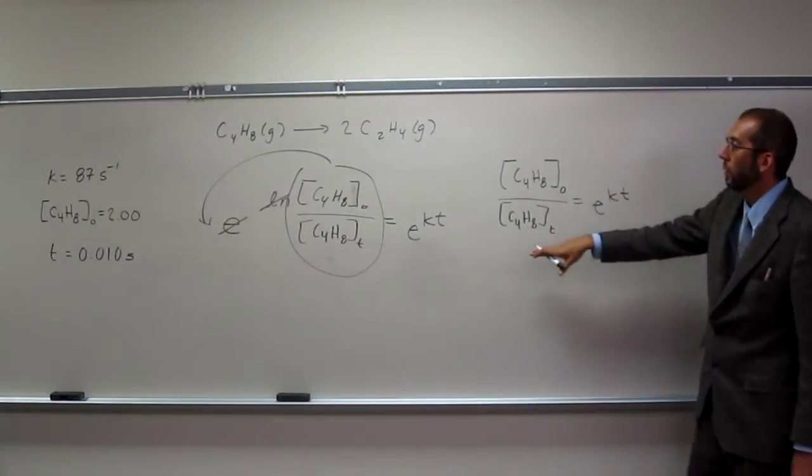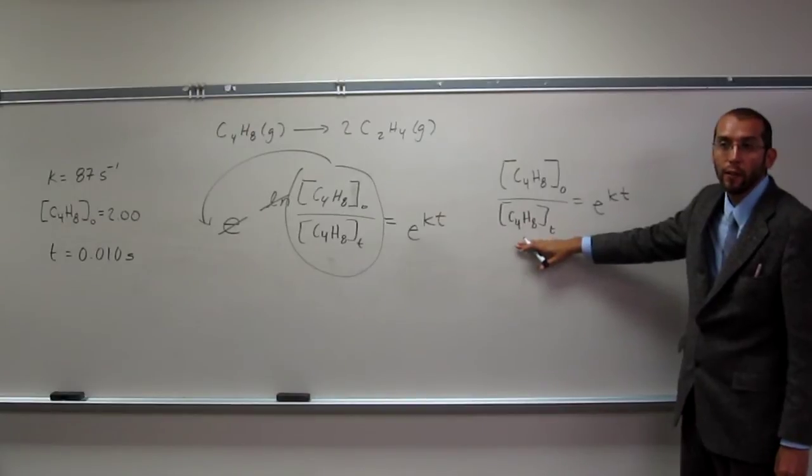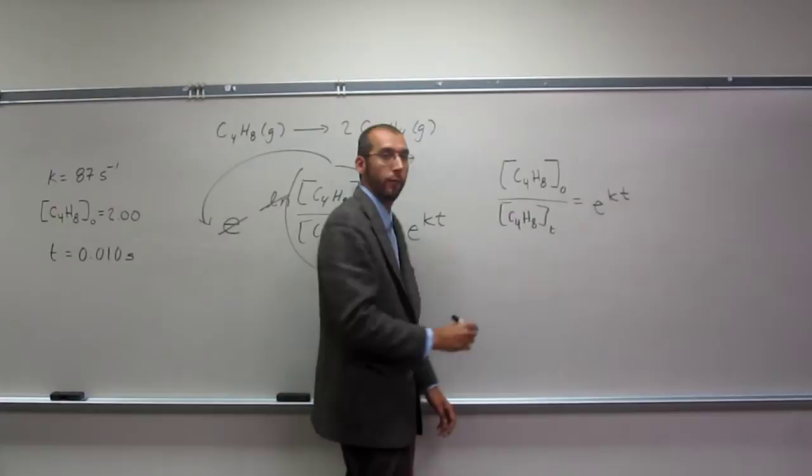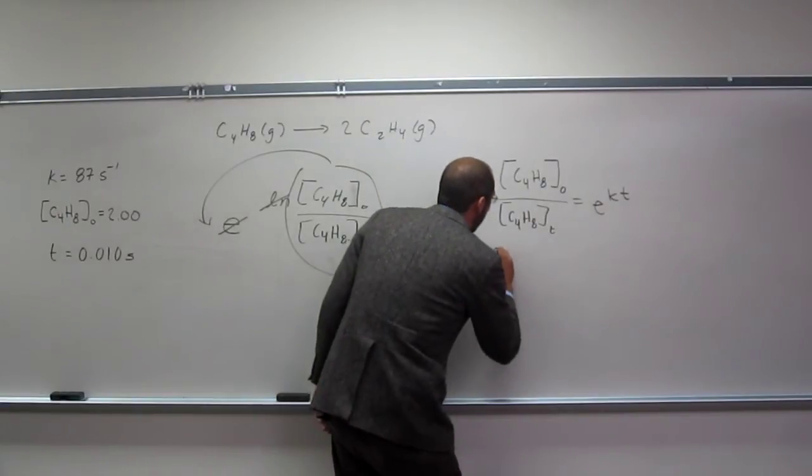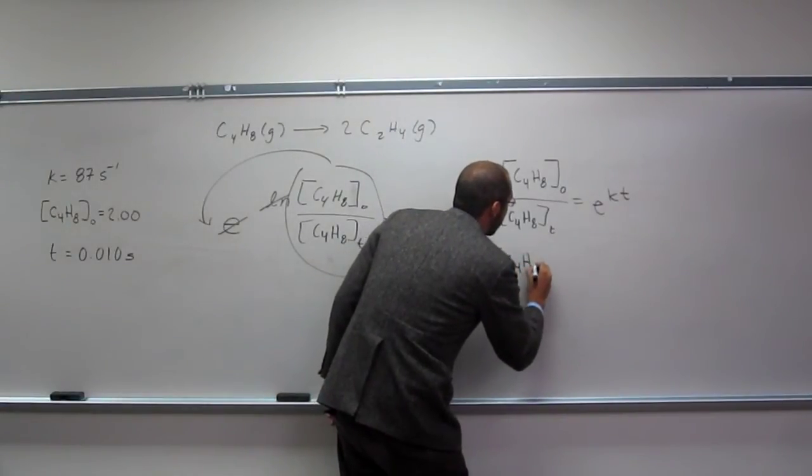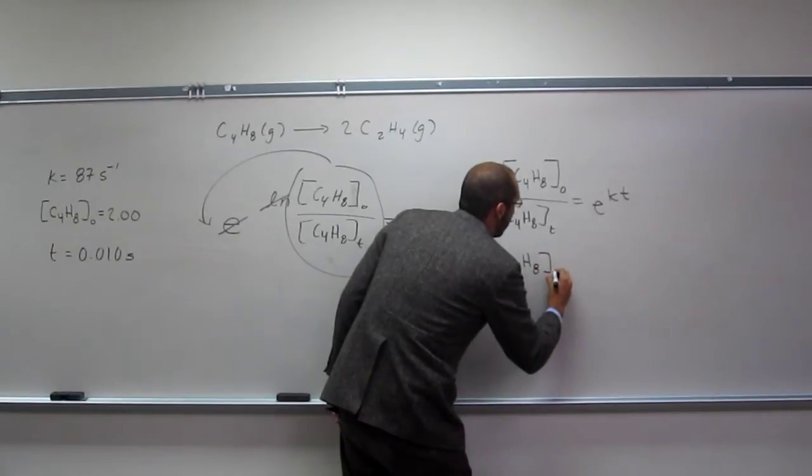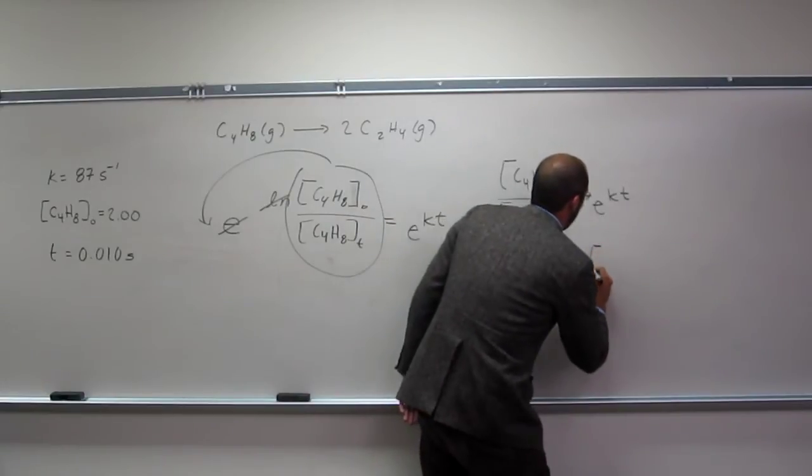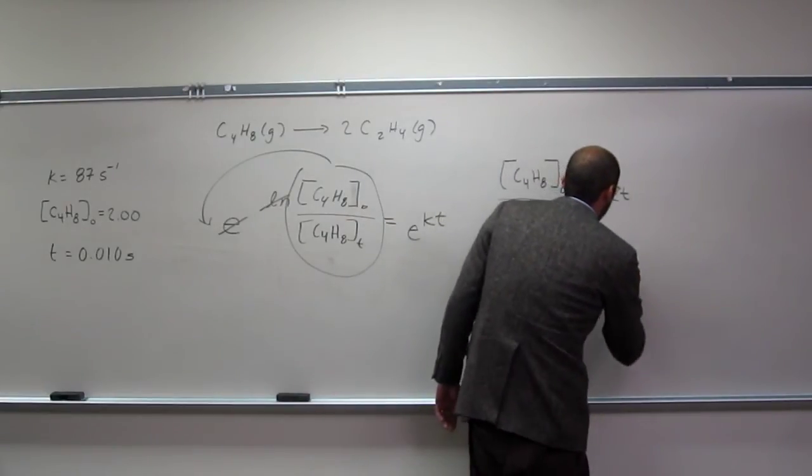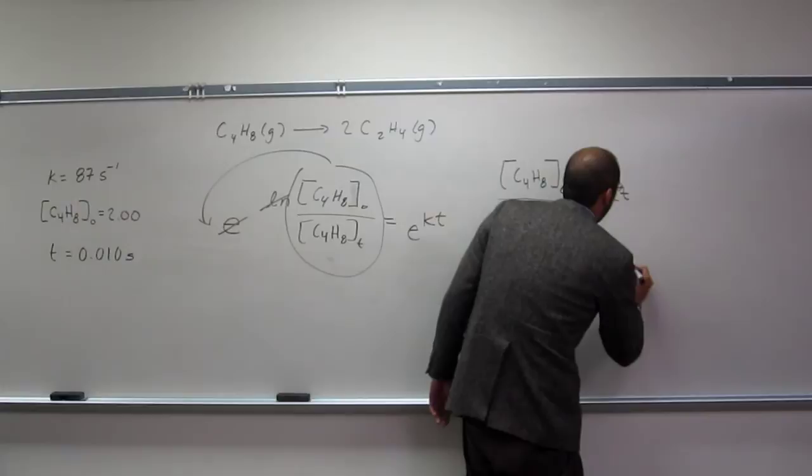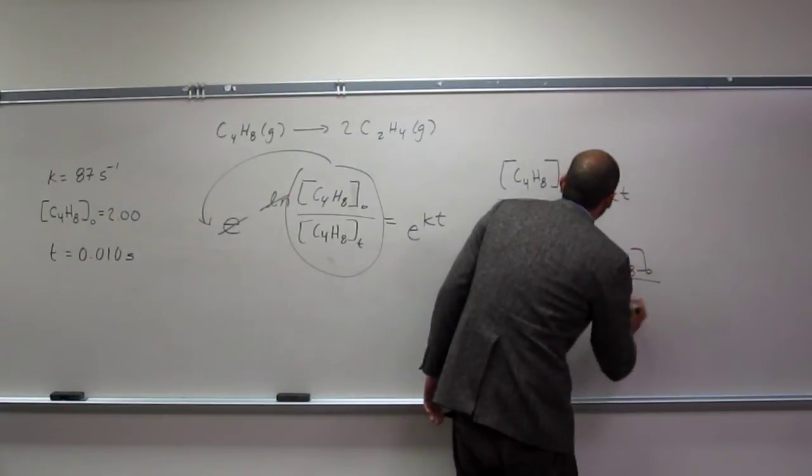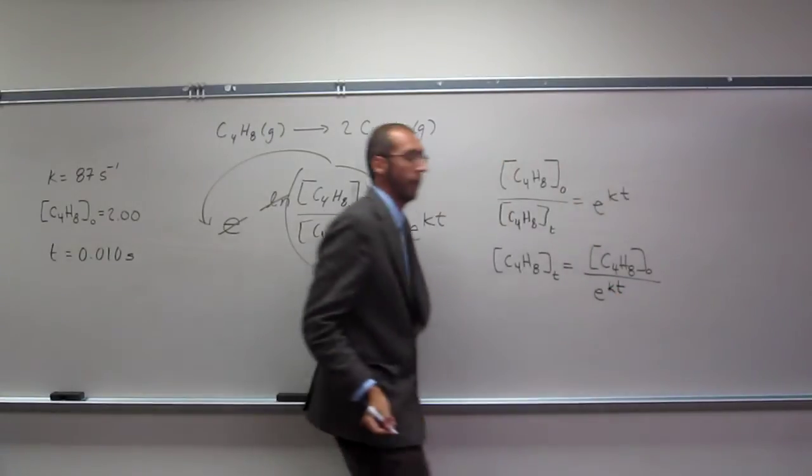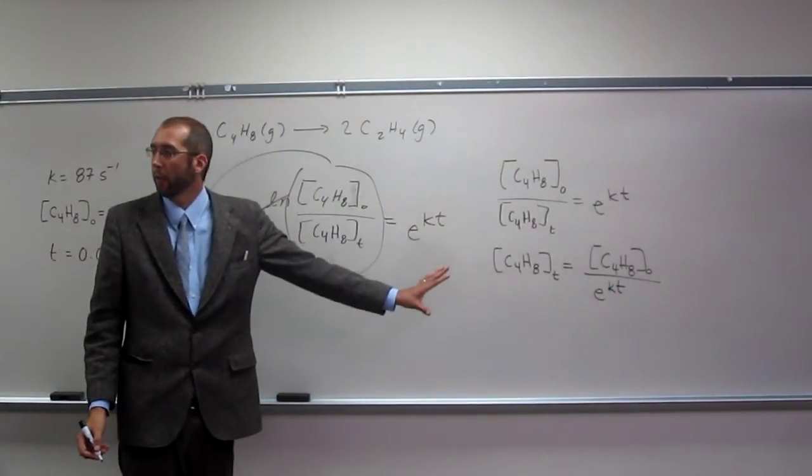And what are we looking for? C4HAT, right? All right, so let's rearrange this equation to get that. So, we get C4HAT equals C4HAO divided by EKT. So, everybody, are you okay with doing that?